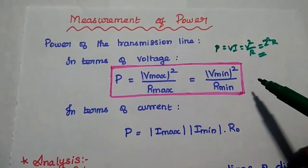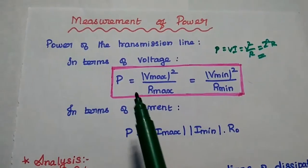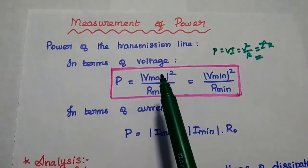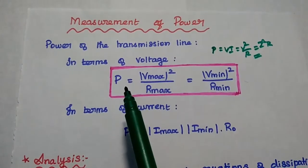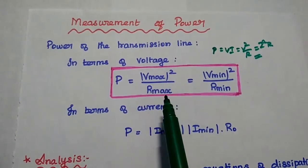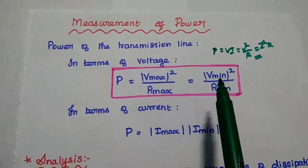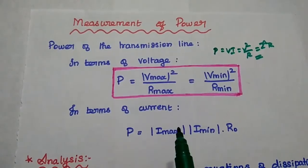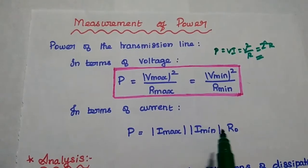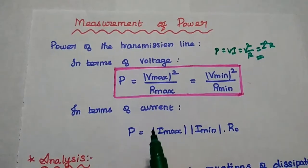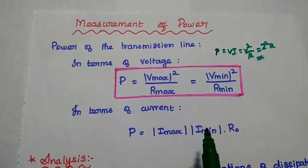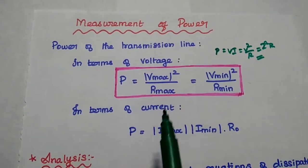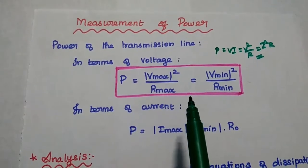The same formula can be used in a transmission line. Power of the transmission line can be measured in terms of voltage using the formula P = V_max² / R_max, which also equals V_min² / R_min. In terms of current, power equals I_max × I_min × R₀. Here I_max means maximum current, I_min means minimum current, V_max means maximum voltage, and V_min means minimum voltage.